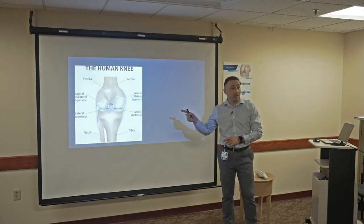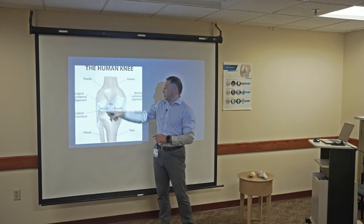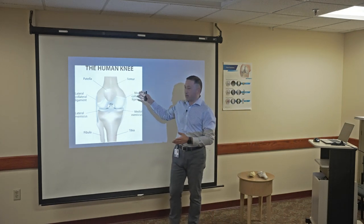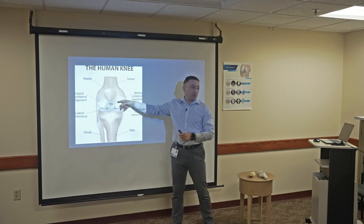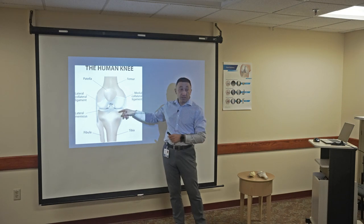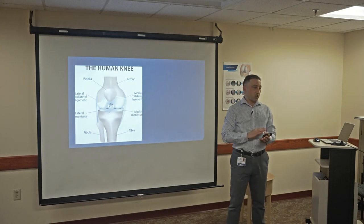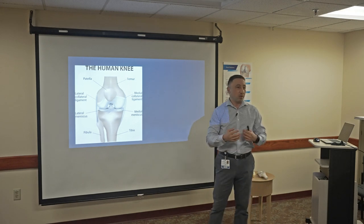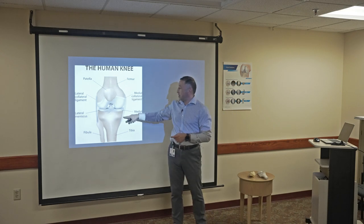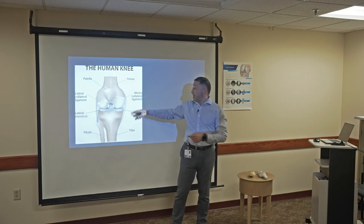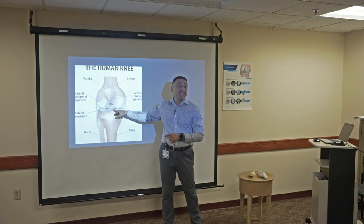We're going to talk today about the knee. As you know, the knee is one of the main joints. It's composed of the femur, tibia, and kneecap, what we call the patella. It has articular cartilage, which is supposed to be white, shiny, and smooth to allow smooth, pain-free movements. It also has ligaments which stabilize the knee, aligned on both sides of the knee as well as inside the knee.